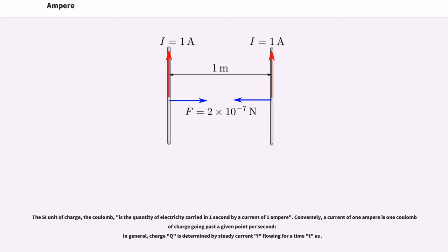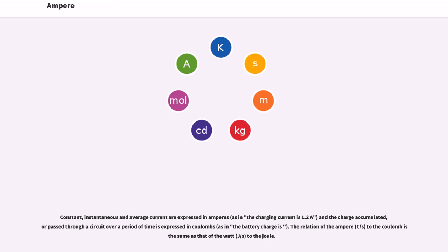Conversely, a current of one ampere is one coulomb of charge going past a given point per second. In general, charge Q is determined by steady current I flowing for a time T as Q=IT. Constant, instantaneous and average current are expressed in amperes, as in 'the charging current is 1.2 A', and the charge accumulated or passed through a circuit over a period of time is expressed in coulombs, as in 'the battery charges'.